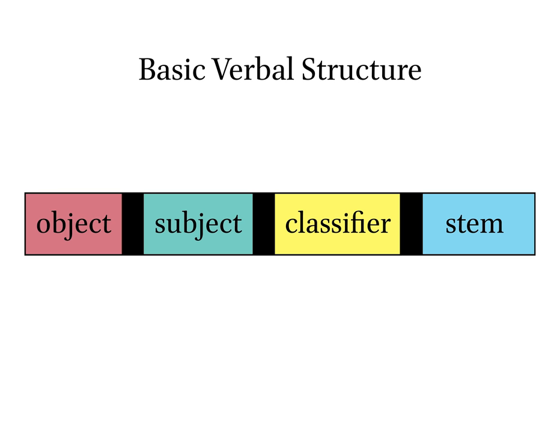The basic structure of Tlingit is object, subject, classifier, and stem. The combination of these and a few other things determines the prefix, which is where most of the verb conjugation occurs.